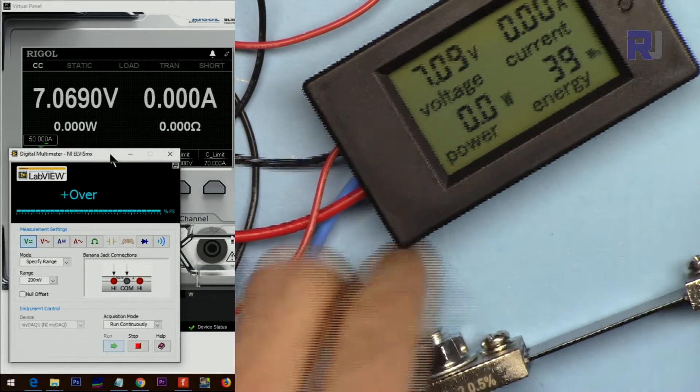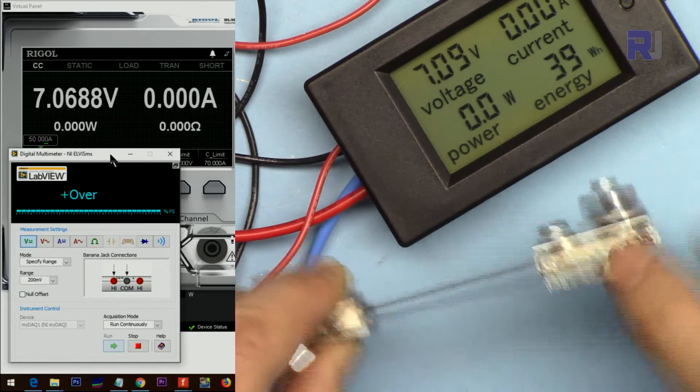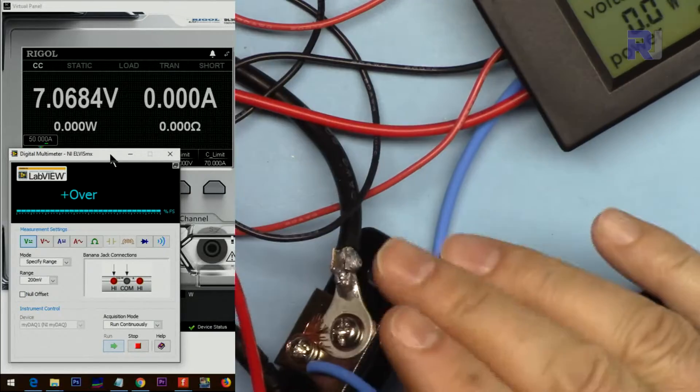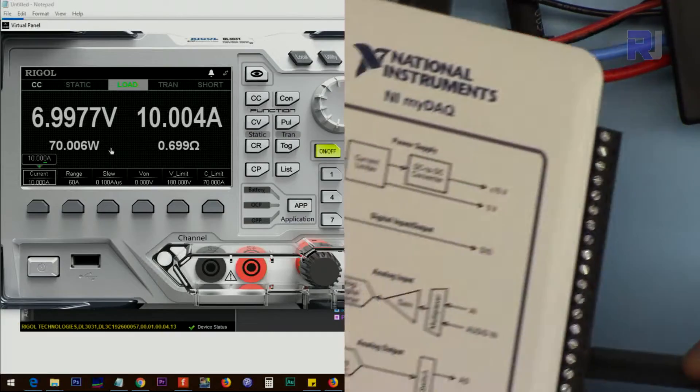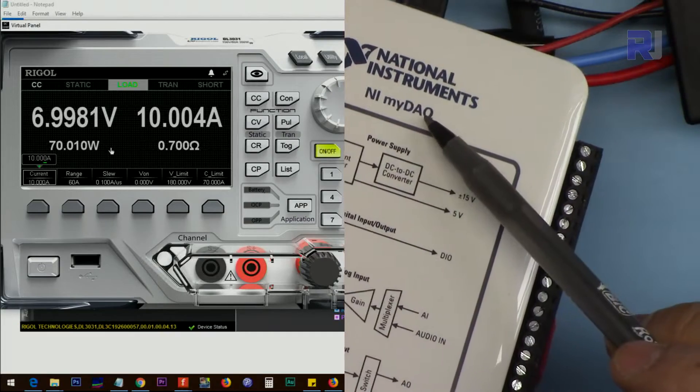We are going to use this 100A 75mV shunt and also 50A 75mV shunt, measuring the voltage across this using this machine instrument, my DAC.